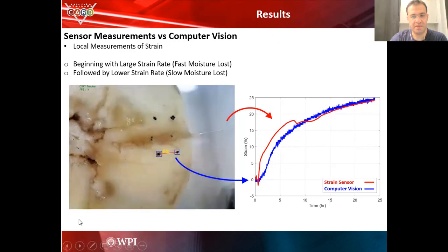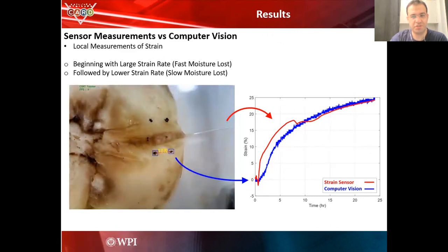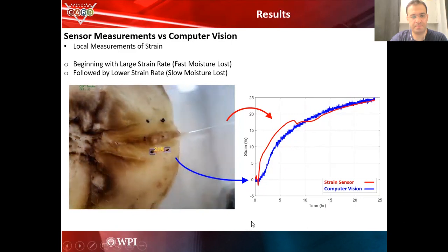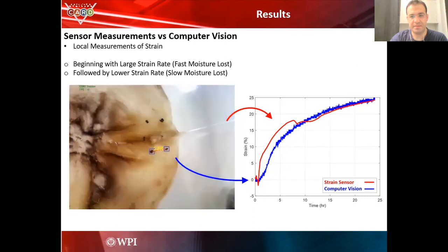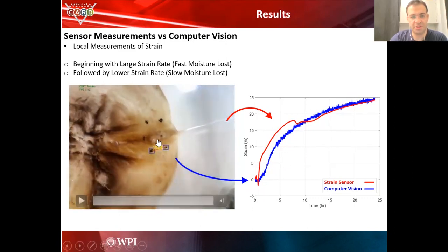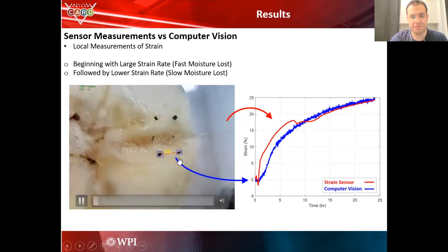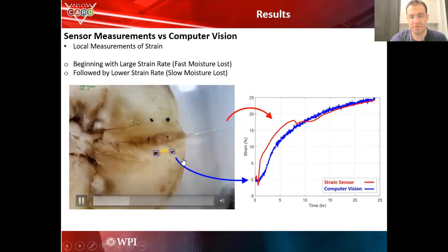Here you can see the banana is shrinking. And our sensor did a good measurement. And also you can see here the change of the shrinkage from the computer vision measurement.